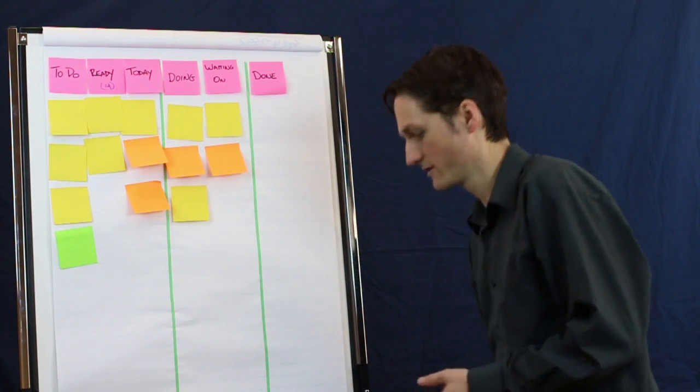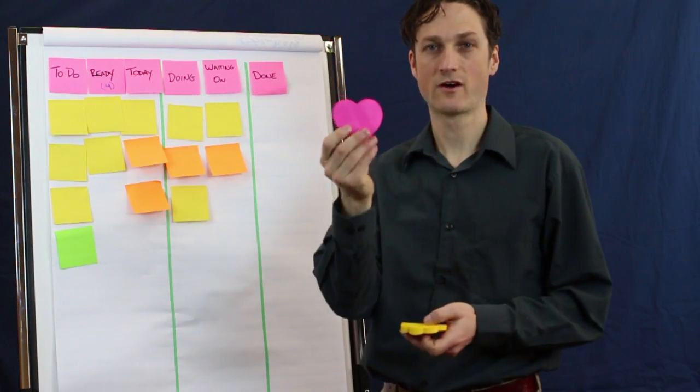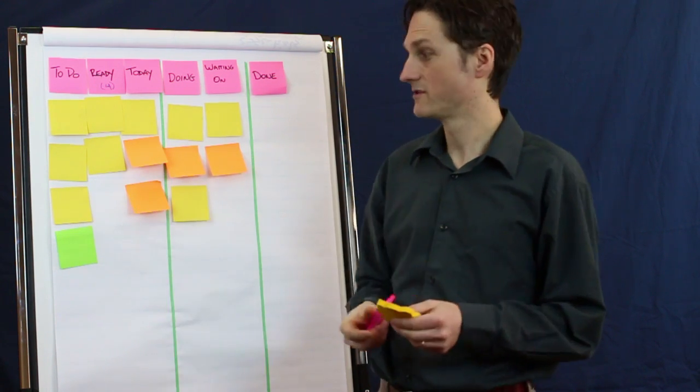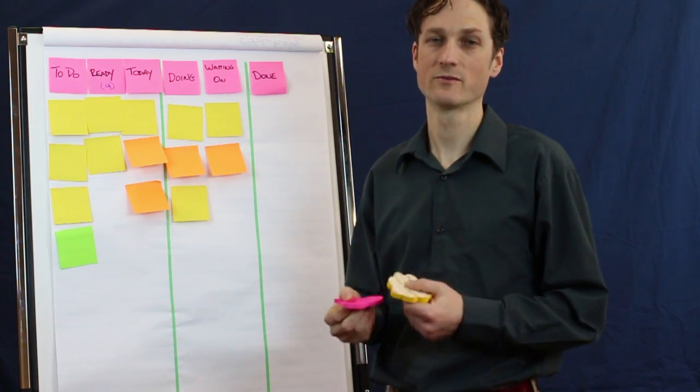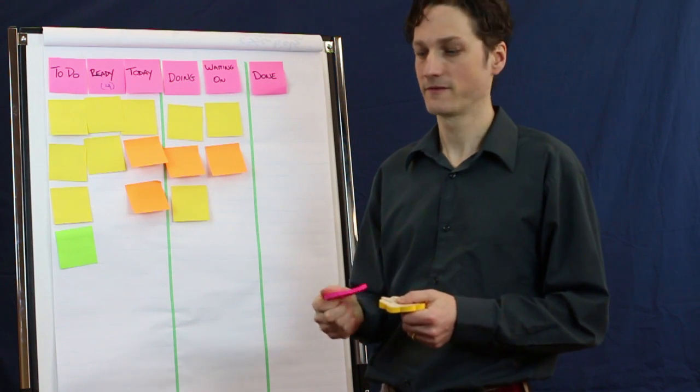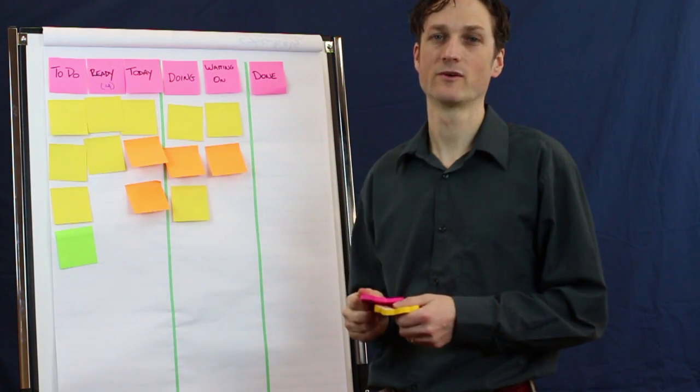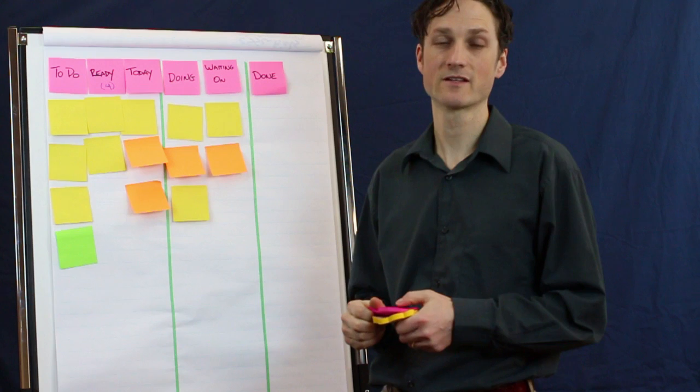You can use some fun post-its. For example, some people like to use hearts or flowers to denote those things that they really want to get to, that they really enjoy. This reminds them visually what's really satisfying for them.